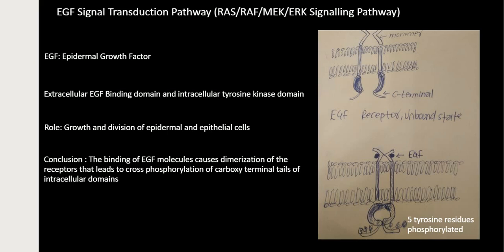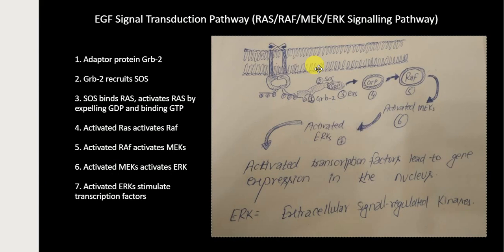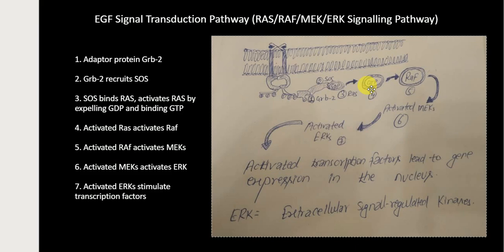After cross phosphorylation of the carboxyl terminal tails of the tyrosine kinase domain has occurred, this phosphorylated region of the EZF receptor acts as an anchor for an adapter protein called GRB2 — Growth Factor Receptor Bound Protein. GRB2 then recruits another protein called SOS. SOS binds the RAS protein, a small G protein, and activates RAS by expelling GDP and binding GTP.